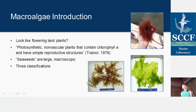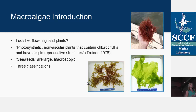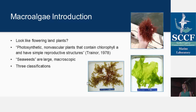To give you an introduction to macroalgae: they can look a little bit like flowering plants, but they lack the true roots, stems, leaves, and vascular structure that flowering land plants have. They're defined as photosynthetic, non-vascular plants that contain chlorophyll A and have simple reproductive structures. A lot of algae are single-cell organisms, but seaweeds, as they're sometimes called, are simply large macroscopic versions of these organisms — hence the name macroalgae.